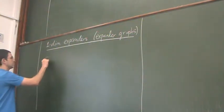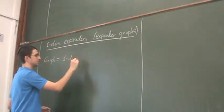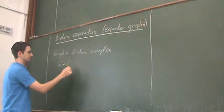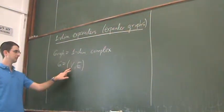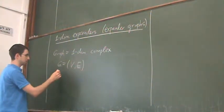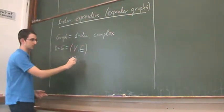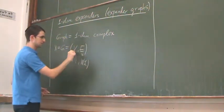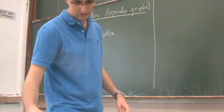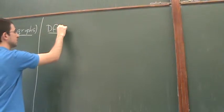Usually we say a graph - just a one-dimensional complex - and write G = (V, E), with V being the set of vertices and E being the set of edges. We will sometimes use the notation X^0 for the zero-dimensional cells and X^1 for the one-dimensional cells, since we are interested in higher-dimensional complexes.